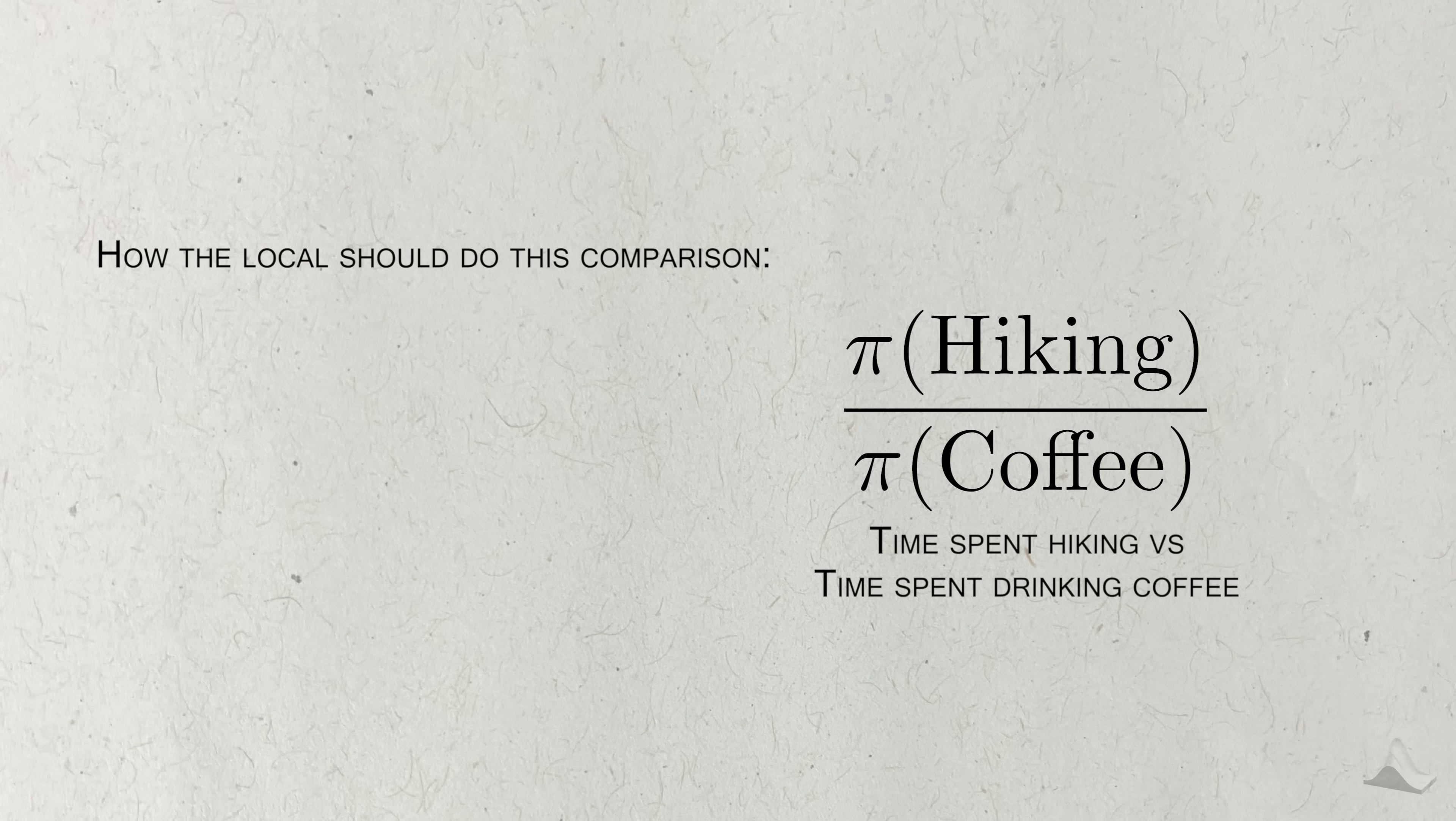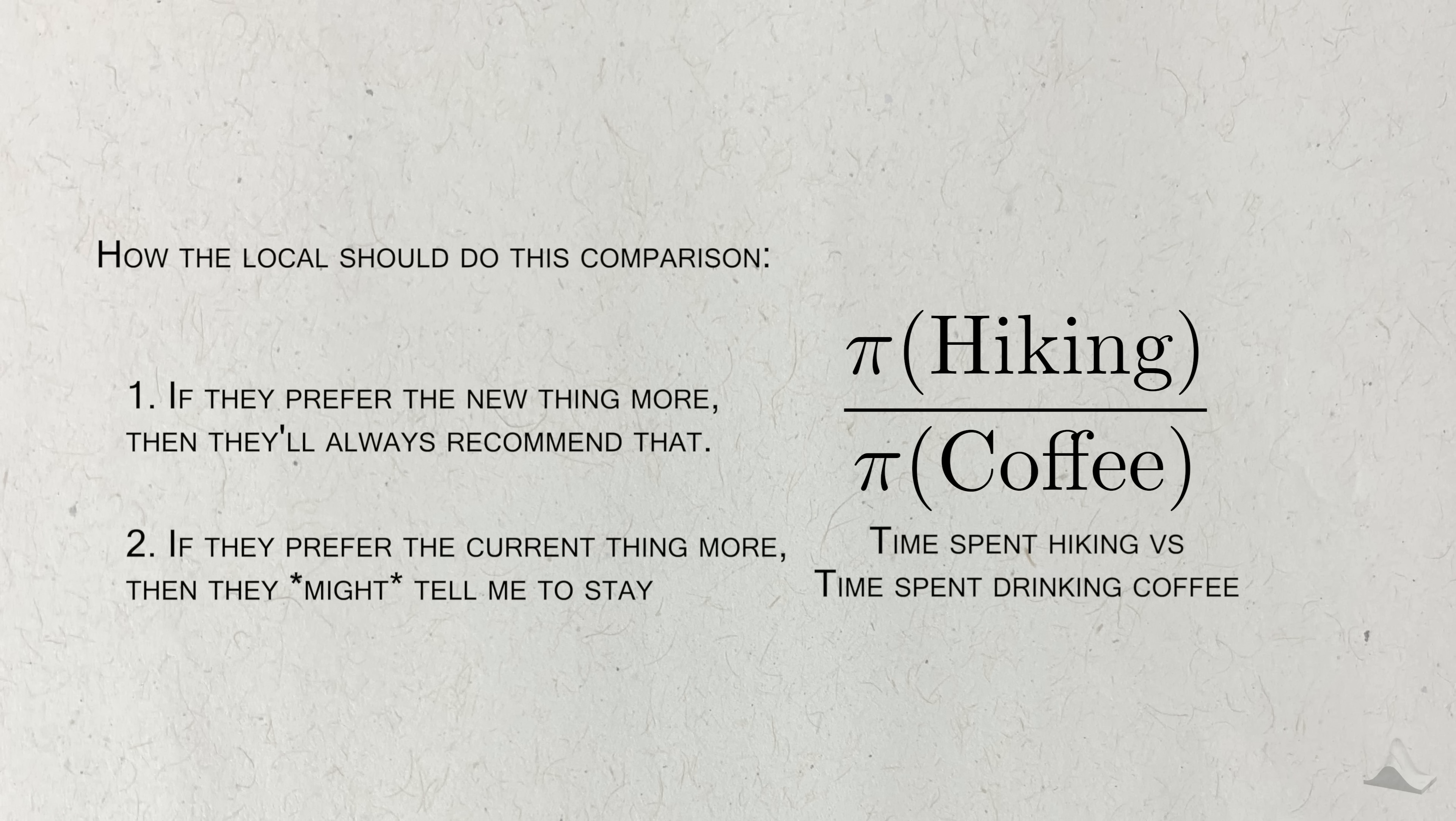In order for the Metropolis algorithm to work, the local needs to process my options in the following way. If the local thinks they'd spend more time hiking compared to drinking coffee, then they'll just immediately tell me to go hiking. On the other hand, if they actually prefer drinking coffee more, they'll compare their preference to hiking to their preference to coffee, and they might even actually tell me to stay, depending on how strong these preferences are.